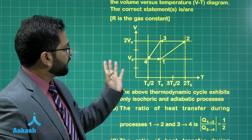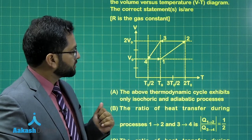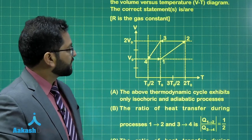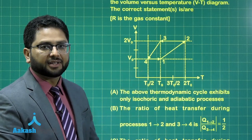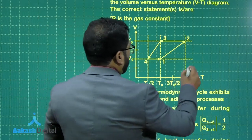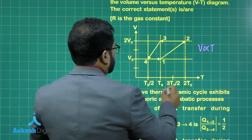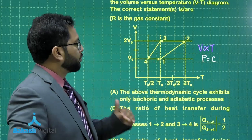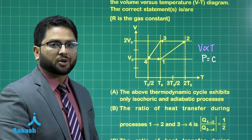For processes 1→2 and 3→4, V is directly proportional to T because when temperature is doubled, the volume is doubled, and when temperature is halved, the volume is halved. So both 1→2 and 3→4 are processes where V is directly proportional to T. And if V is directly proportional to T, it means the pressure has to be constant. So effectively, 1→2 is isobaric, 2→3 isochoric, 3→4 isobaric, and 4→1 isochoric.